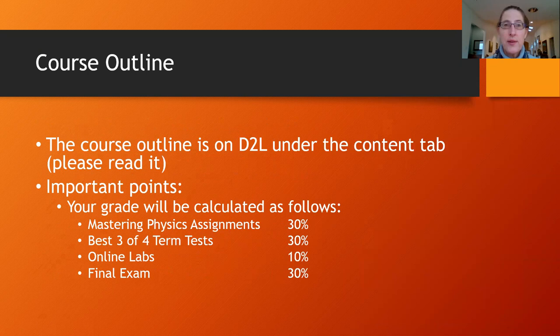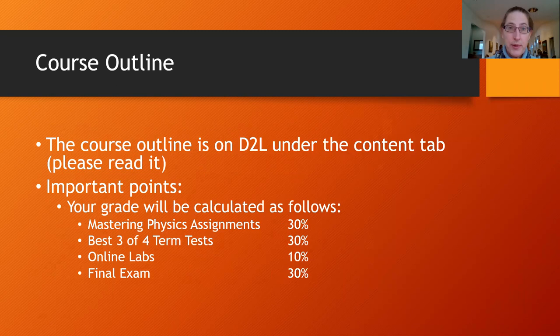The course content and the outline are all posted on D2L, so please read that. The important points are to notice how you're going to be graded. All the work you do on Mastering Physics will be 30% of your grade. You will have four written term tests — one hour each — and you'll be able to take the best three of those four, which will be 30%. There will be mandatory online labs worth 10%, and your final exam will be 30% of your mark.